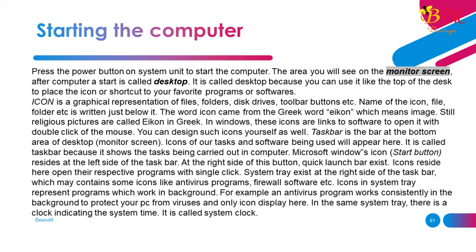The Microsoft Windows icon (start button) resides at the left side of the taskbar. At the right side of this button, the quick launch bar exists — icons here open their respective programs with a single click. The system tray exists at the right side of the taskbar, and may contain icons like antivirus programs, firewall software, etc. Icons in the system tray represent programs that work in the background. For example, an antivirus program works consistently in the background to protect your PC from viruses. In the same system tray, there is a clock indicating the system time, called the system clock.